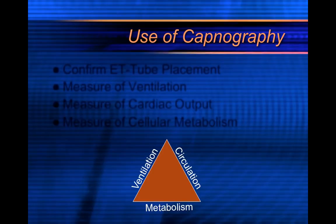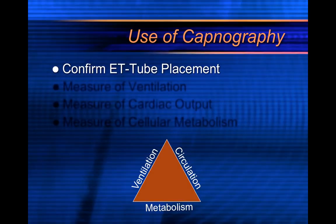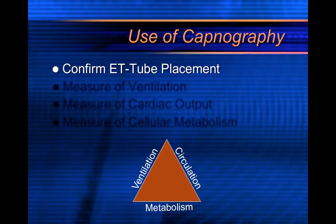The different uses of capnography — you can use it to confirm ET tube placement or endotracheal tube placement. It is somewhat the gold standard: you want to visualize the tube going through, listen to lung sounds, see misting in the tube, and observe improvement in patient condition, but you definitely want to confirm placement with capnography. With capnography, you can actually attach your monitor file to your report and show that you are getting capnography values — you can't really argue that. Short of having your partner breathe into the capnography device to get numbers, which is not recommended, it's essentially 100% confirmation of whether you did or did not have a good endotracheal intubation.